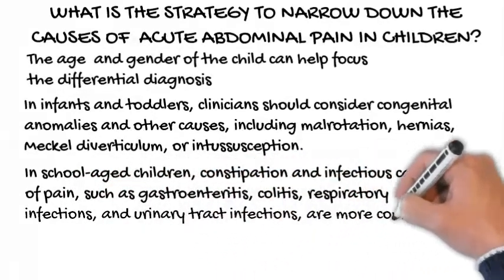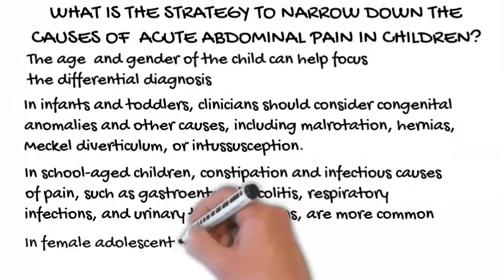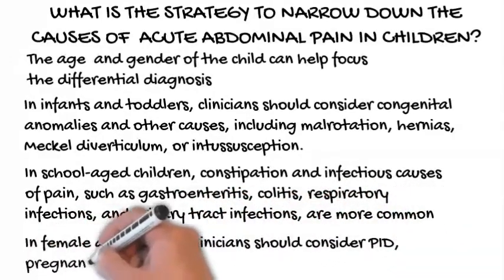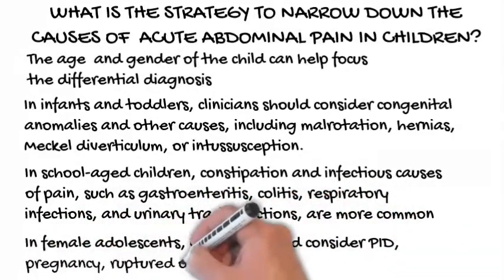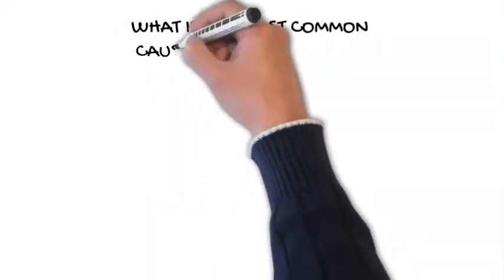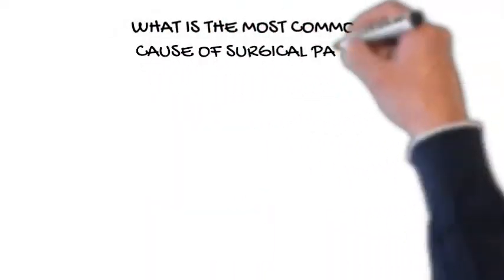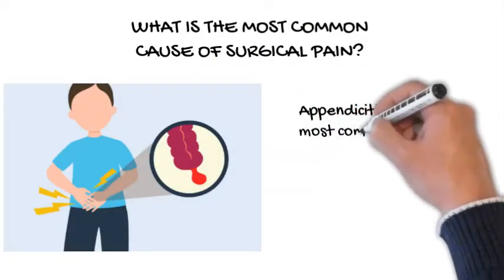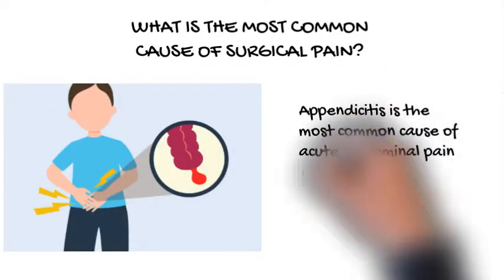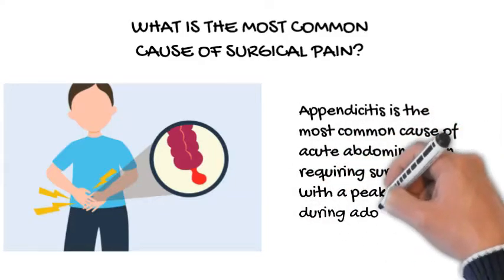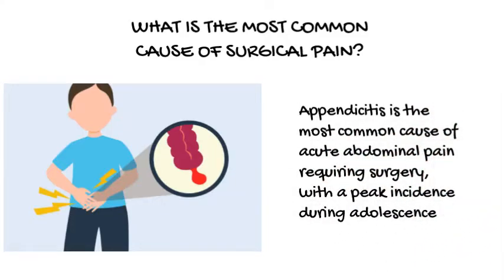In female adolescents, clinicians should consider pelvic inflammatory disease, pregnancy, ruptured ovarian cysts, or ovarian torsion. Appendicitis is the most common cause of acute abdominal pain requiring surgery, with a peak incidence during adolescence.